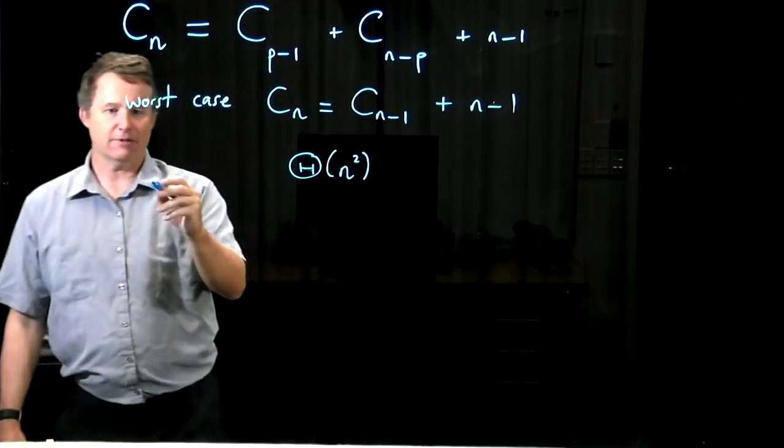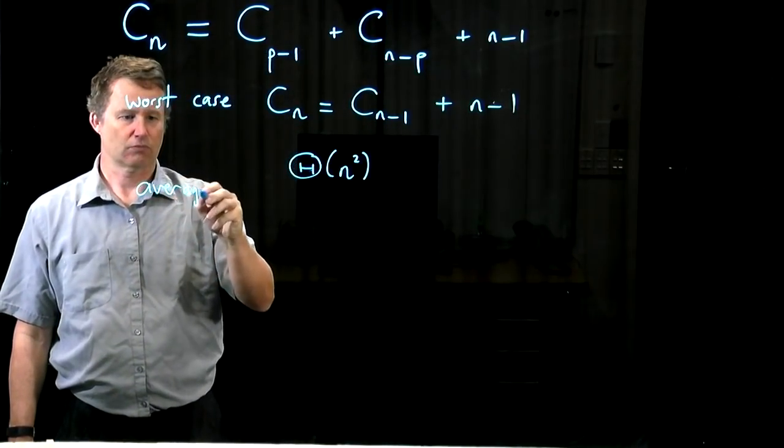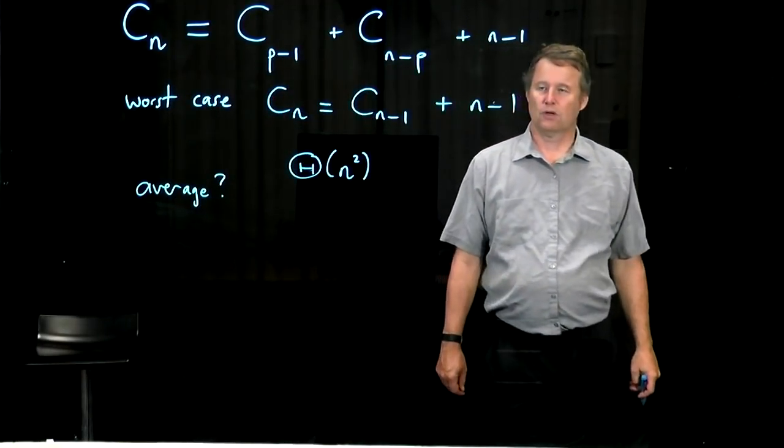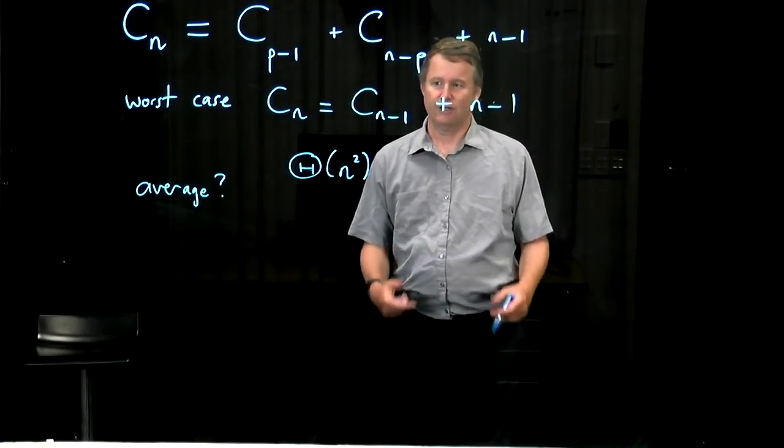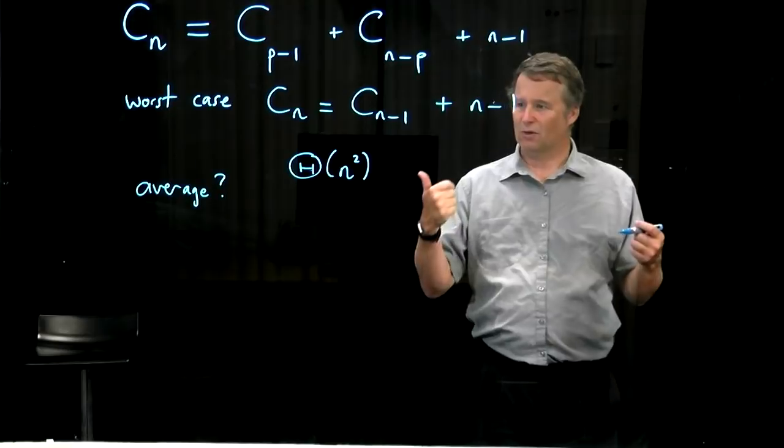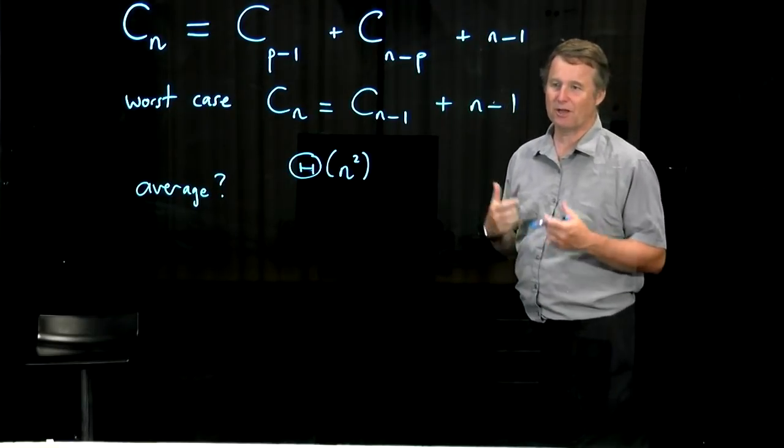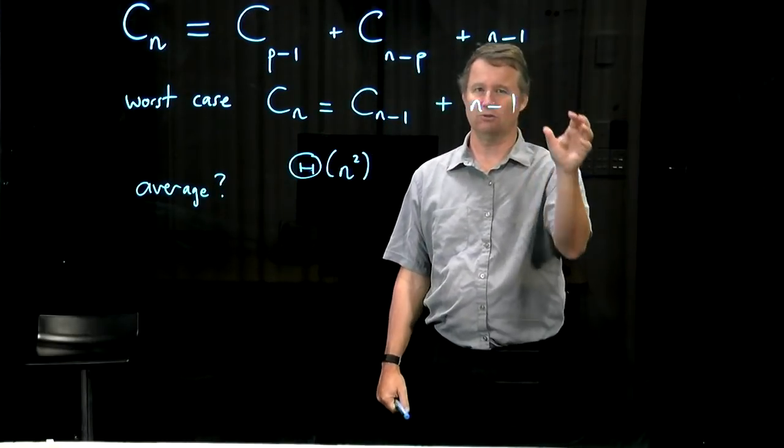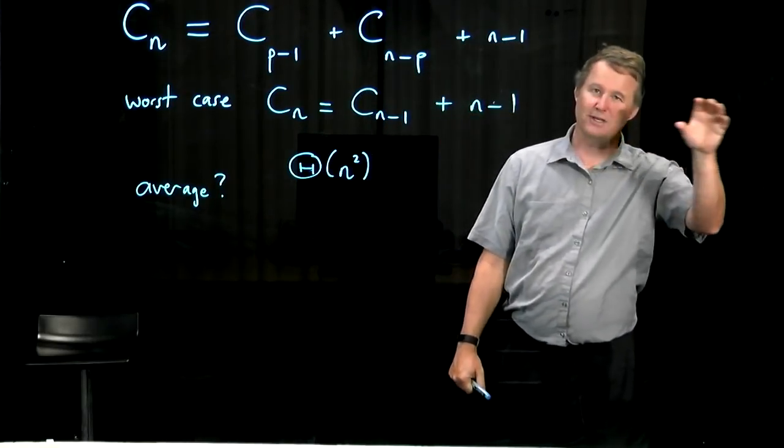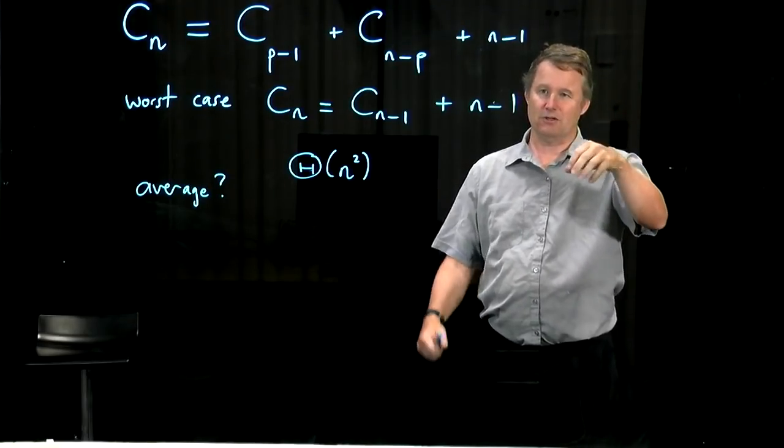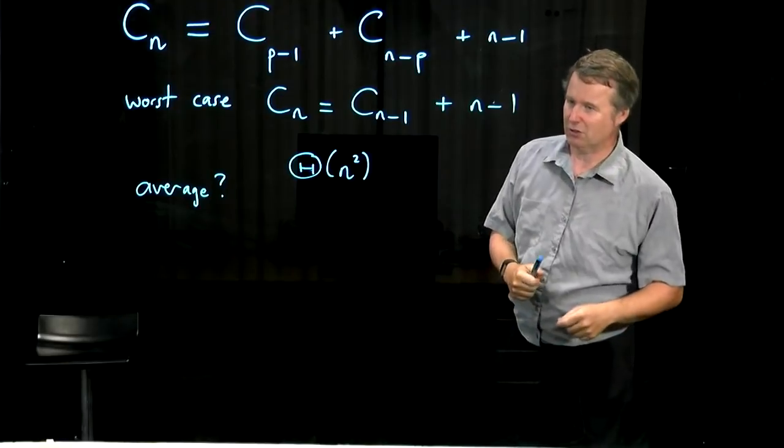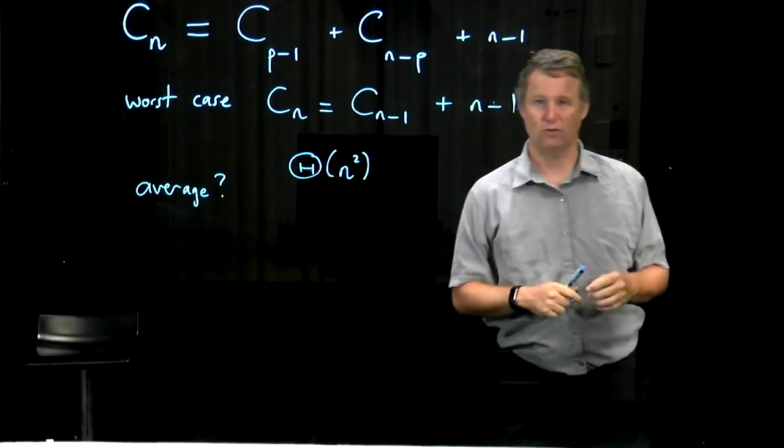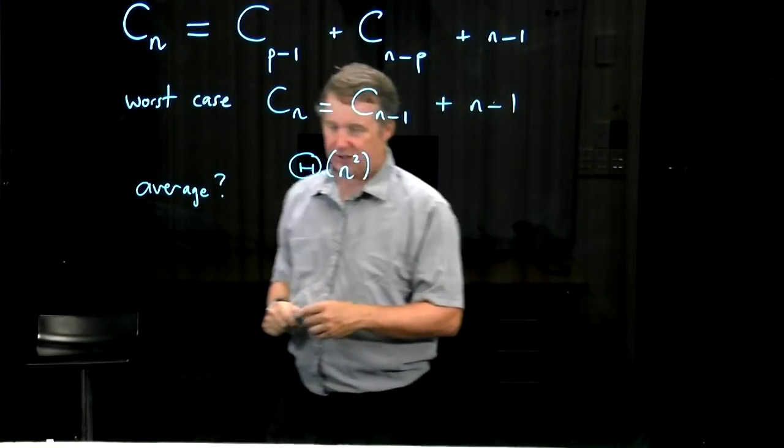So the question is what happens in the average case? It's very unclear even what the best case for quicksort is, so it's hard to know what to guess here. But we hope that the average case is somehow better than the worst case. Intuitively we think the pivot is going to be kind of close to the middle, or at least equally distributed, and maybe when it's near the middle we get a nice even split which is kind of like merge sort, which gives us n log n. So maybe we have a chance of doing better than n squared. Let's see what happens.